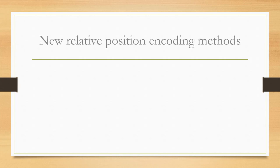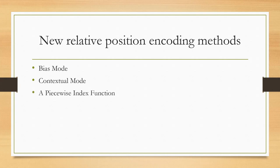Now let's discuss the new methods proposed by the authors. We will cover two different modes — bias mode and contextual mode — and then the piecewise index function, which replaces the basic clipping method mentioned in Shaw's work.